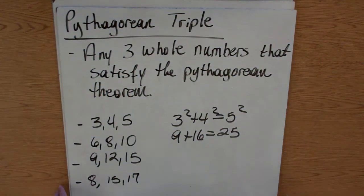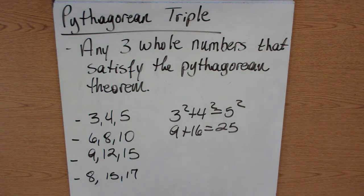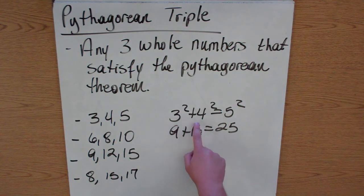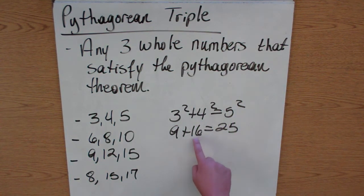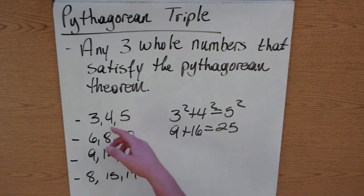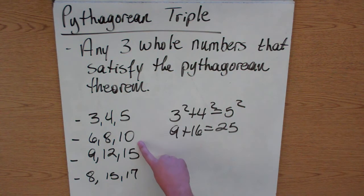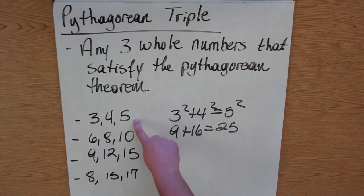There are things called Pythagorean triples. A Pythagorean triple is any three whole numbers that satisfy the Pythagorean Theorem. The most common example is 3, 4, 5 — because 3 squared plus 4 squared equals 5 squared: 9 plus 16 equals 25. Another Pythagorean triple is 6, 8, 10. All I did was take those three numbers and multiply them all by 2. This is still a Pythagorean triple because it's still in the ratio of 3 to 4 to 5.